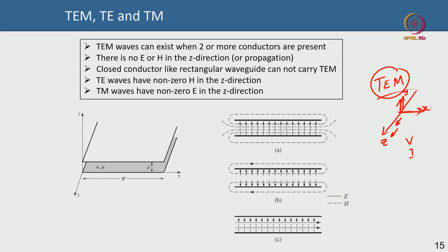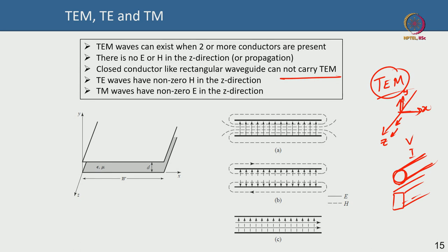If you have a single closed conductor — like a rectangular waveguide or a circular waveguide — there are no two conductors, so it cannot carry a pure TEM wave. Plane waves can still be considered pure TEM because you can say there are two infinitely large plates separated by infinity. But in a closed conductor you cannot have a pure TEM wave.